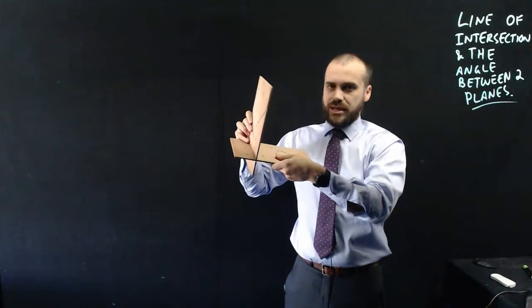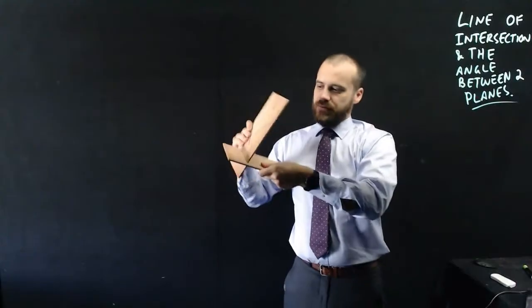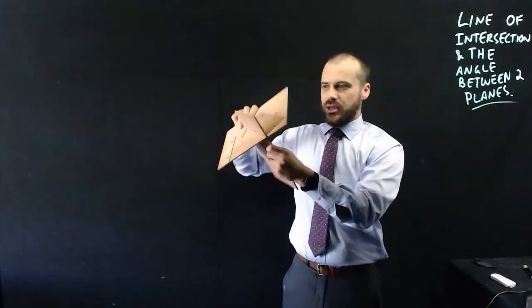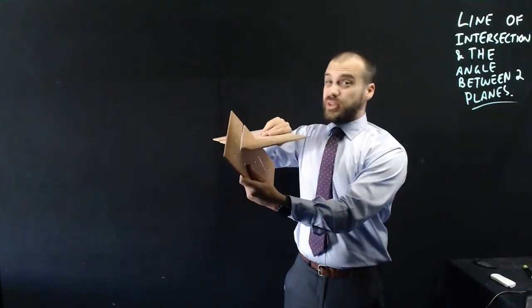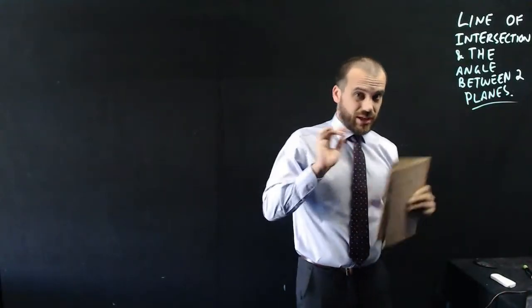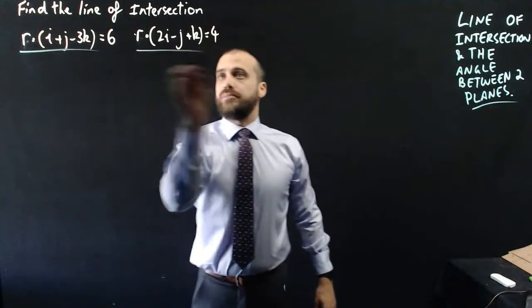Now, I'm giving the impression that they meet like that. But they could meet sort of like that, like that. They could meet on all sorts of weird angles and stuff. There's multiple different ways that these planes could meet. But they're always going to have a line of intersection if they're not parallel. So we have two planes here. Plane 1 and plane 2.